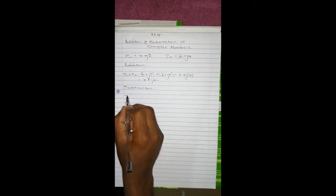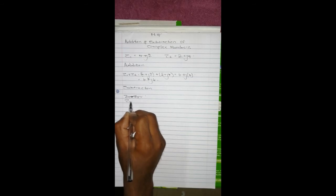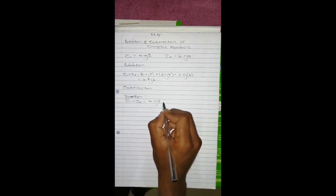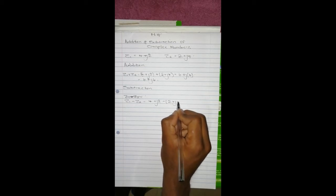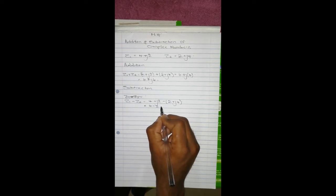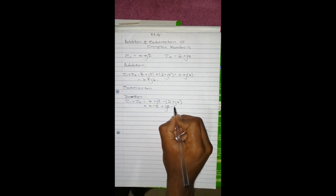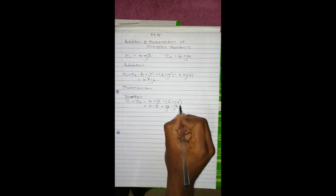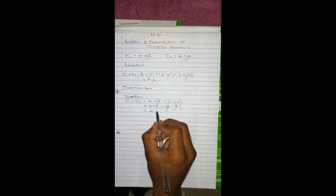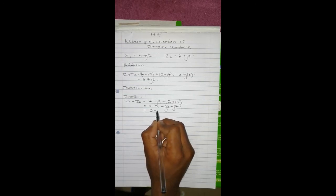You do it in a similar manner. For z1 minus z2 it's going to be 4 plus 2j minus 2 plus 4j. Take note: when you read this you read it as 2j, not j2. So this is going to be 4 minus 2, plus 2j minus 4j, and this gives you 2 and negative 2j.